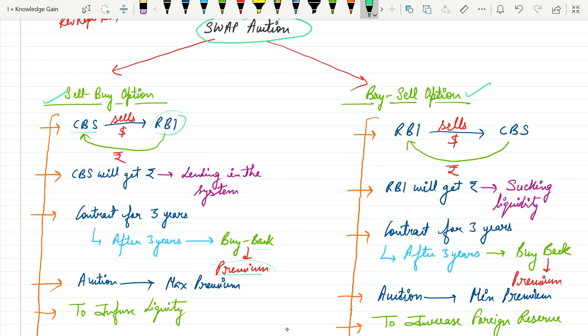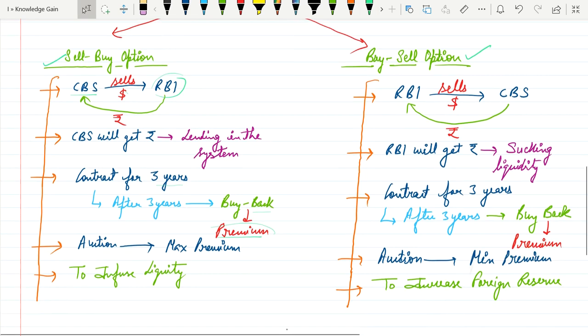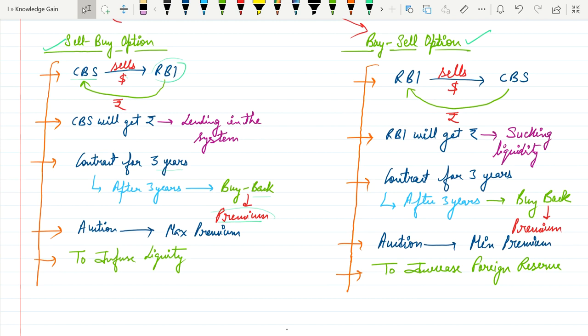Another option is BUY SELL option. In this, RBI sells dollars to the commercial banks and in return RBI gets rupees. That means RBI basically wants to suck liquidity from the market. Again this transaction is dependent on a contract. After three years, the RBI will buy back the same quantity of dollars at premium. RBI will set up an auction to pay minimum premium to the commercial banks.